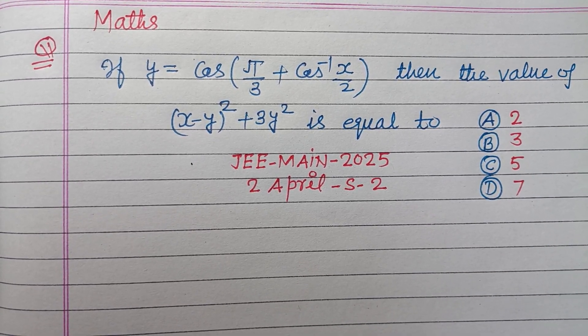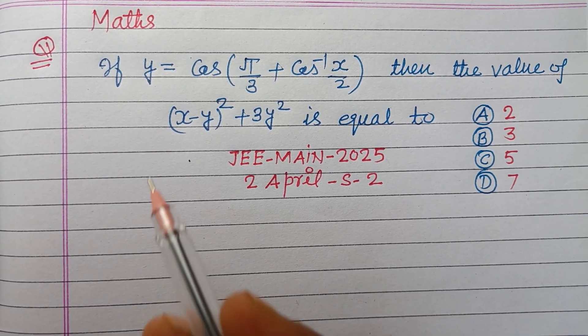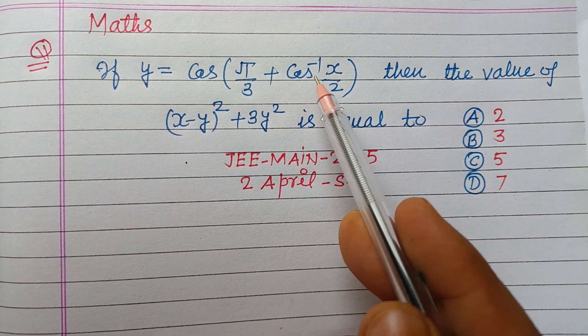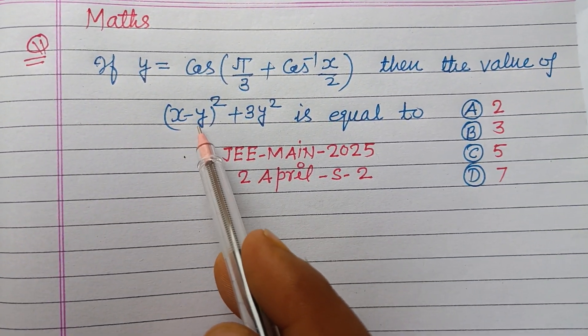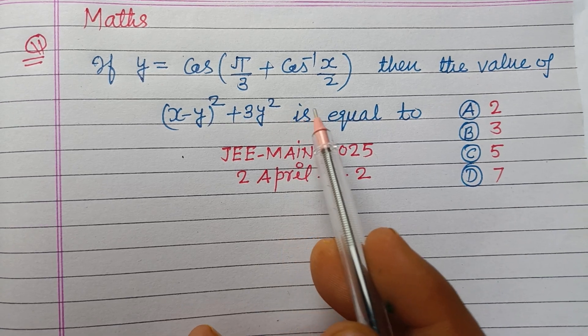Question from JEE Main 2025 second approach shift second. If y equals cos(πy/3 + cos inverse xy/2), then the value of (x - y) whole square plus 3y square is equal to.